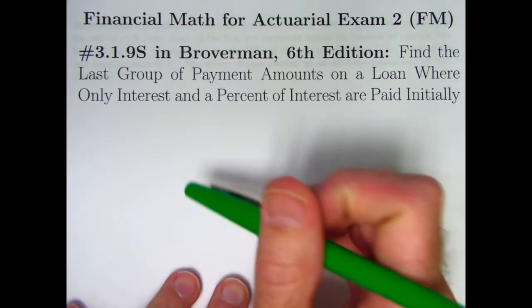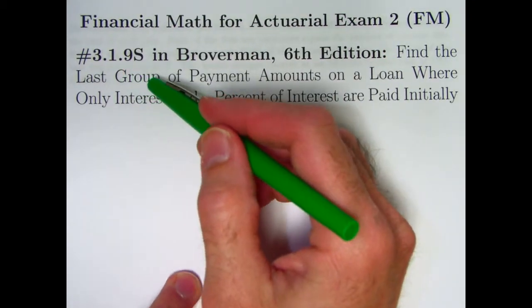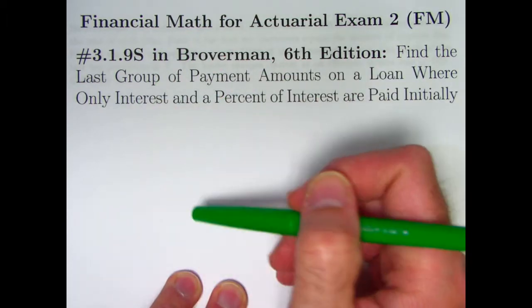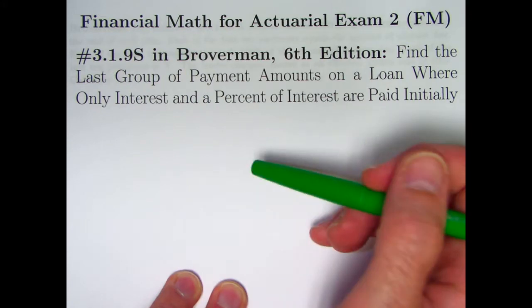Hi, in this video we're doing an old actuarial exam problem 3.1.9S in Broverman. We'll be finding the last group of payment amounts on a loan where only interest and a percent of interest are paid initially.